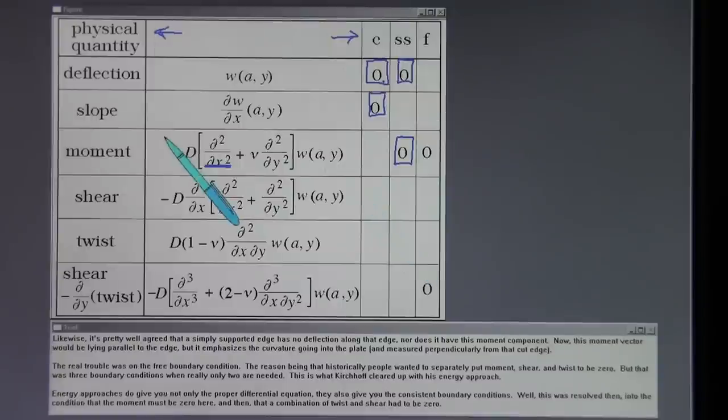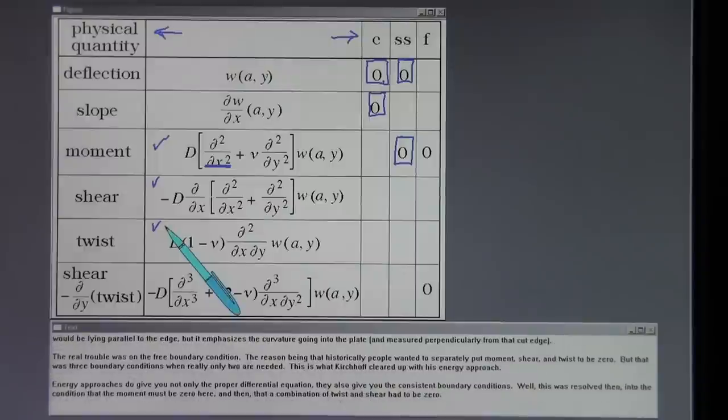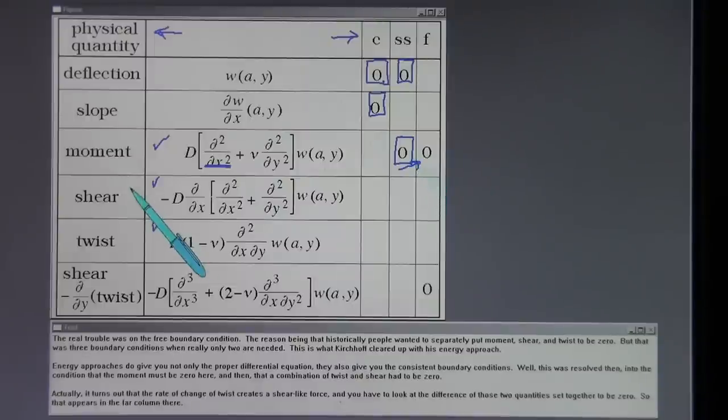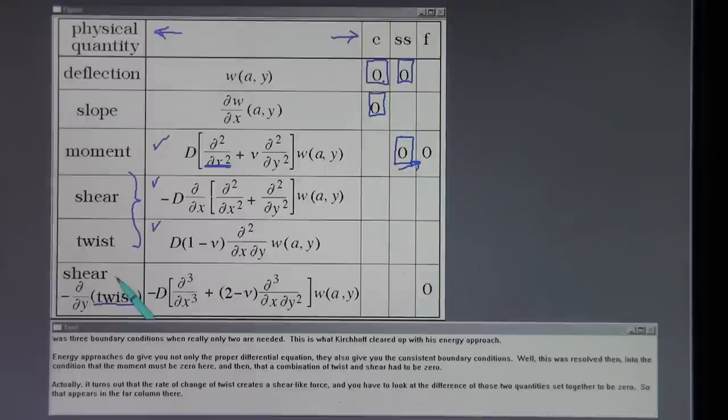The real trouble was on the free boundary condition. The reason being that historically people wanted to separately put moment shear and twist to be zero, but that was three boundary conditions when really only two are needed. This was what Kirchhoff cleared up with his energy approach. Energy approaches do give you not only the proper differential equation, they also give you the consistent boundary conditions. Well, this was resolved then into the condition that the moment must be zero, here, and then the combination of twist and shear had to be zero. Actually, it turns out that the rate of change of twist creates a shear-like force, and you have to look at the difference of those two quantities set together to be zero. So that appears in the far column there.